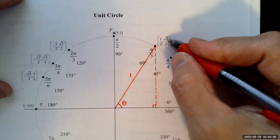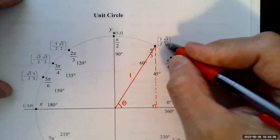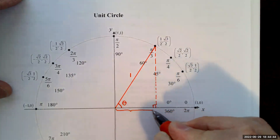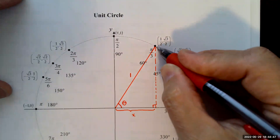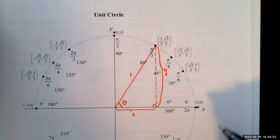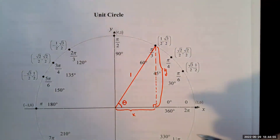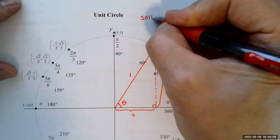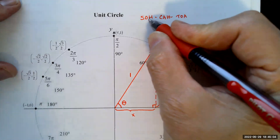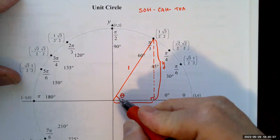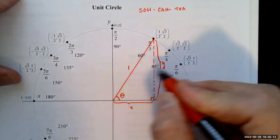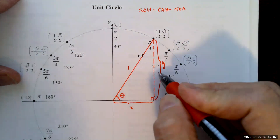You're given the coordinates of this point, which is on the unit circle. The x-coordinate is simply this horizontal distance, and the y-coordinate is this vertical distance. Using SOH-CAH-TOA, sine is opposite over hypotenuse — so sine of theta is y over one, which is just y.